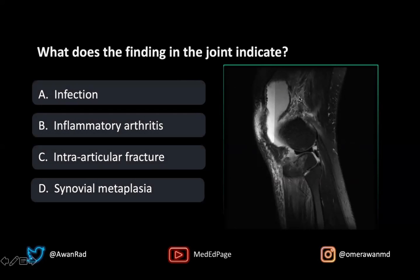If we take a look at the joint first, we notice that there is some fluid in the joint, so there's definitely a joint effusion. Really all four of these choices can have a joint effusion — infection such as septic arthritis, inflammatory arthritis like rheumatoid arthritis, intraarticular fracture with blood in the joint, or even synovial metaplasia like PVNS can have an effusion. So that doesn't really help us.